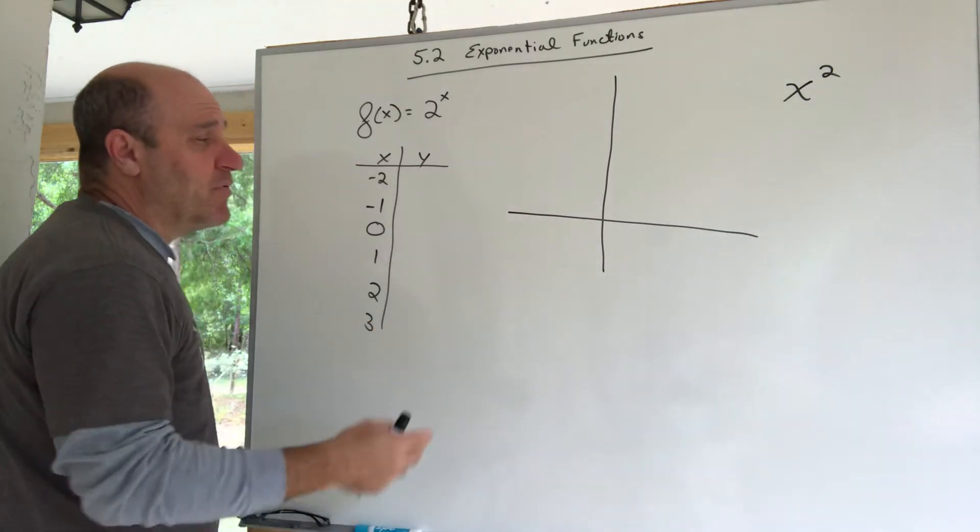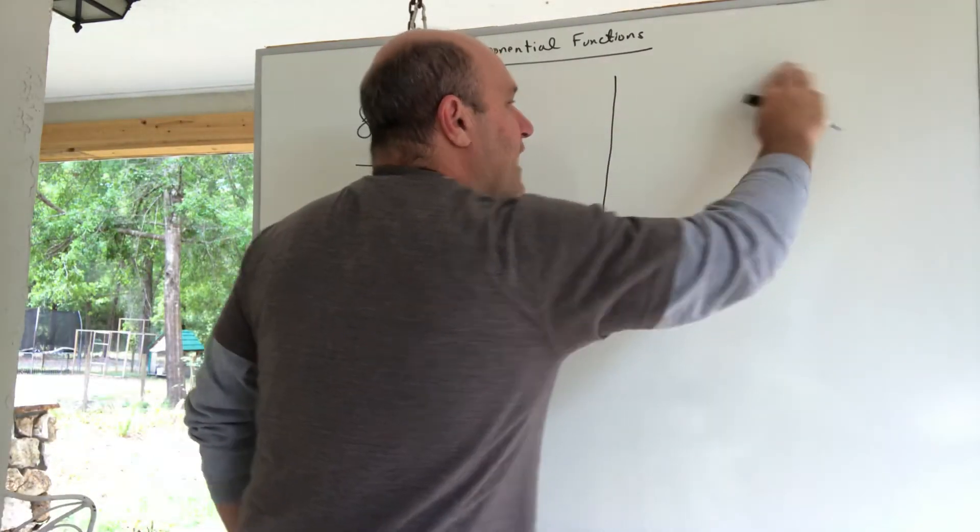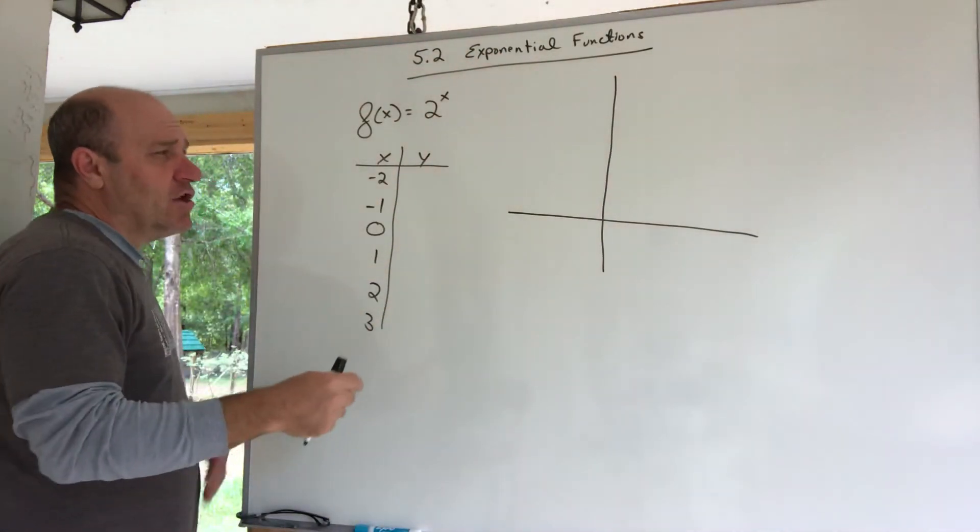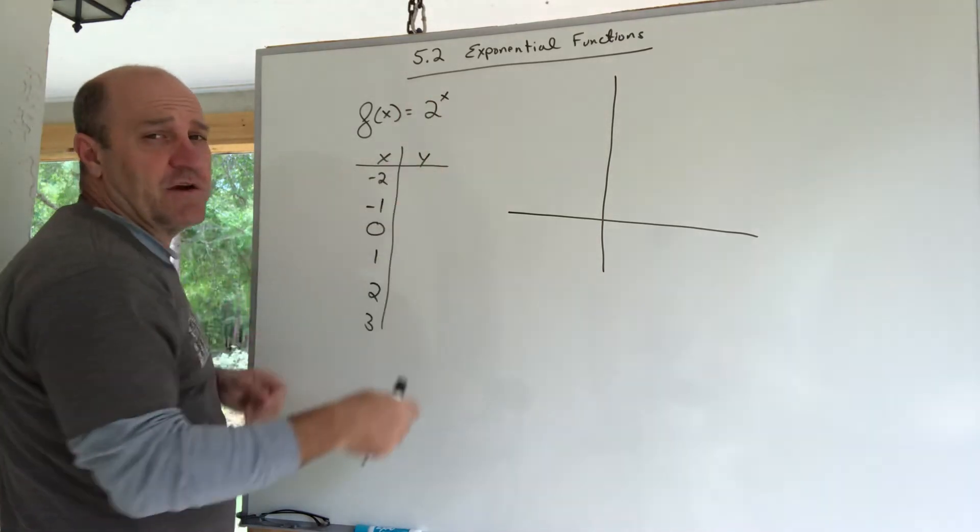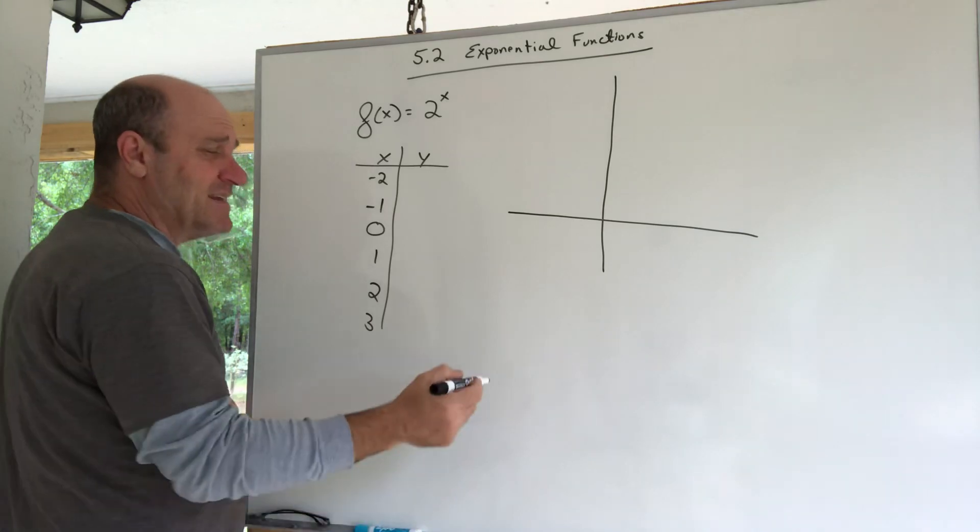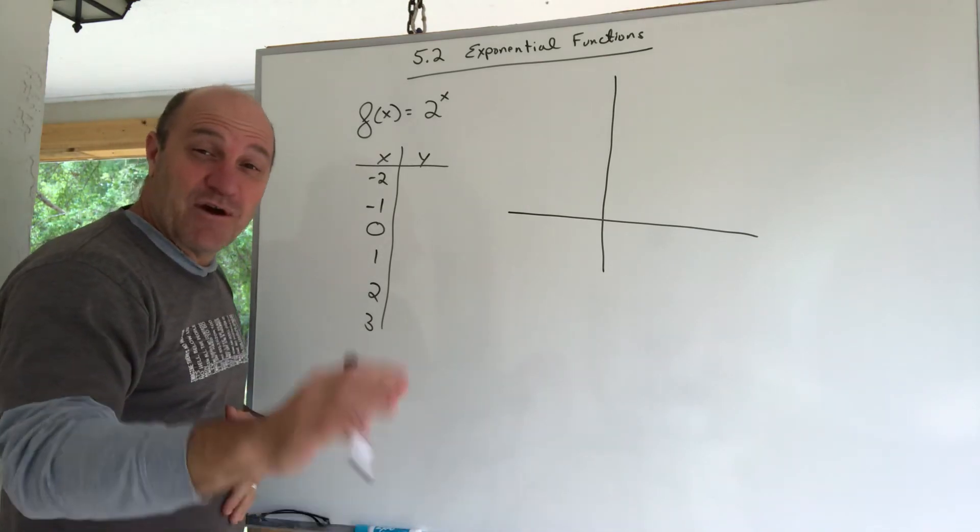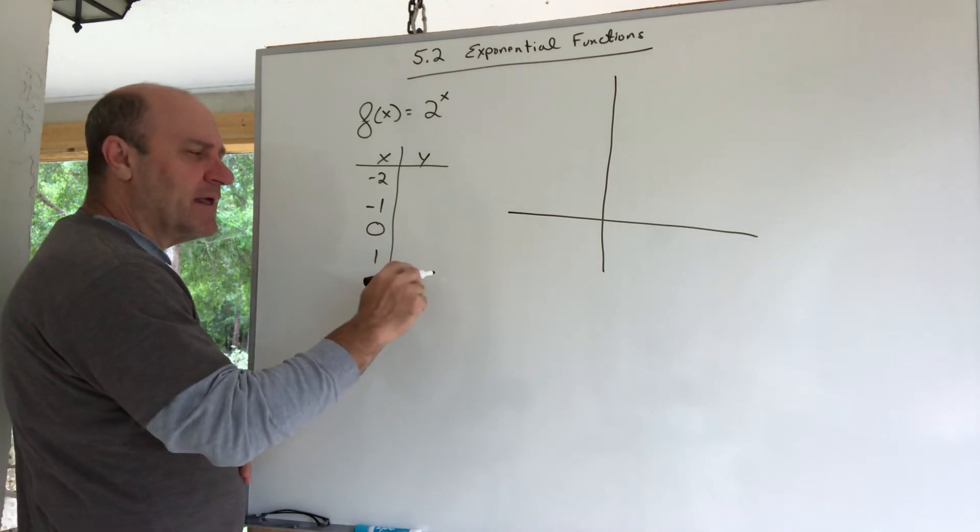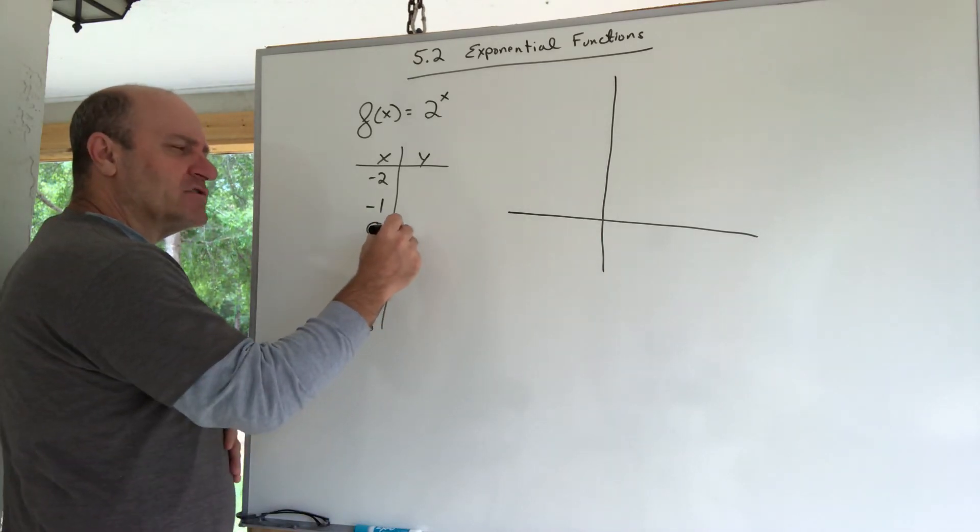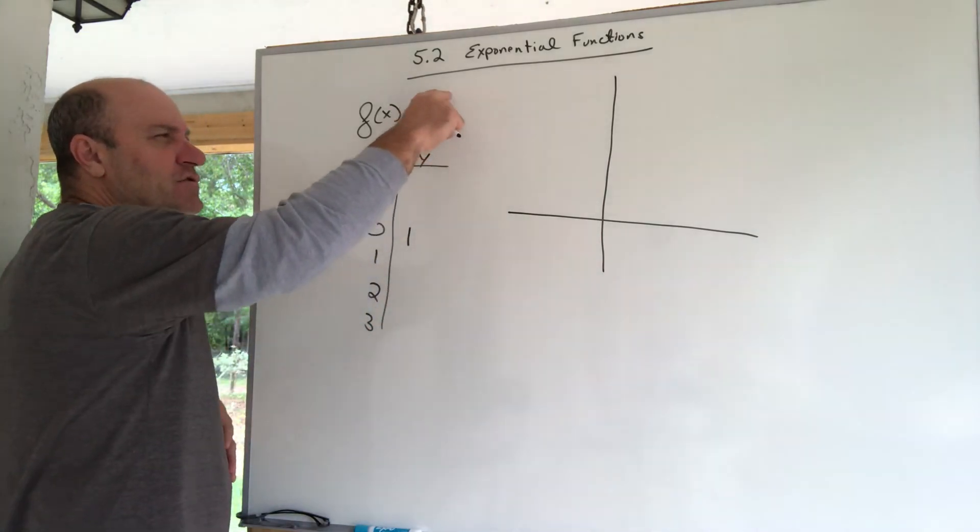Let's plot some points and see what this is like. So I made a little chart. I'll start with the middle here. If you plug in a zero you got 2 to the zero. Anything to the zero is one. It's kind of a funny rule. I could prove it to you later. So when I plug in a zero, 2 to the zero is one.